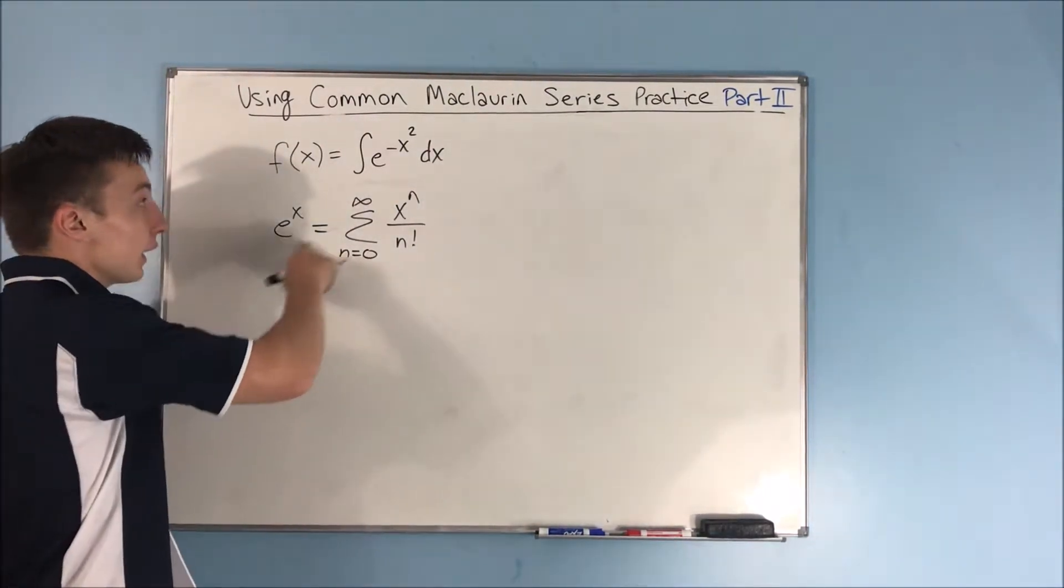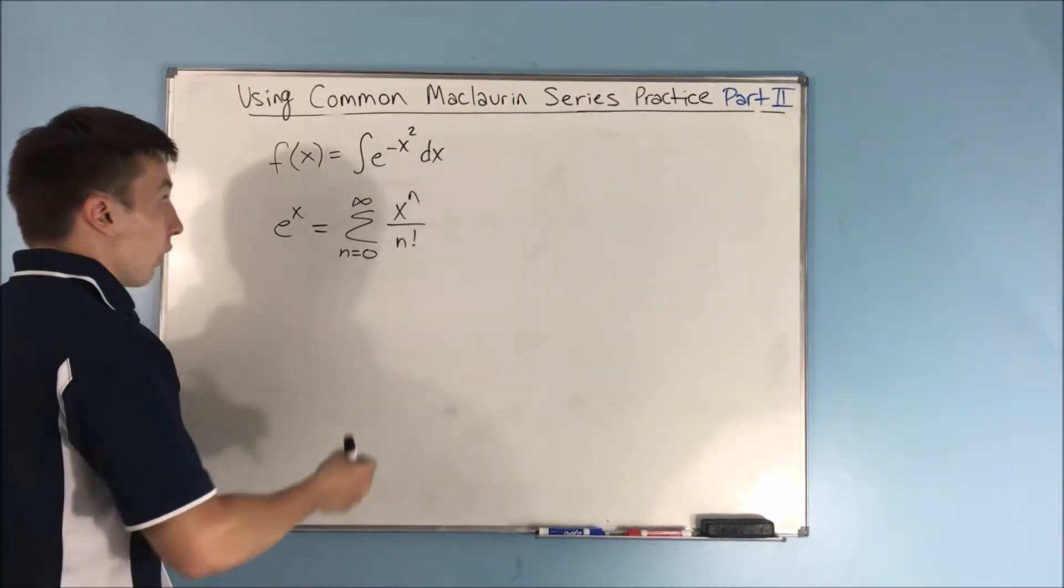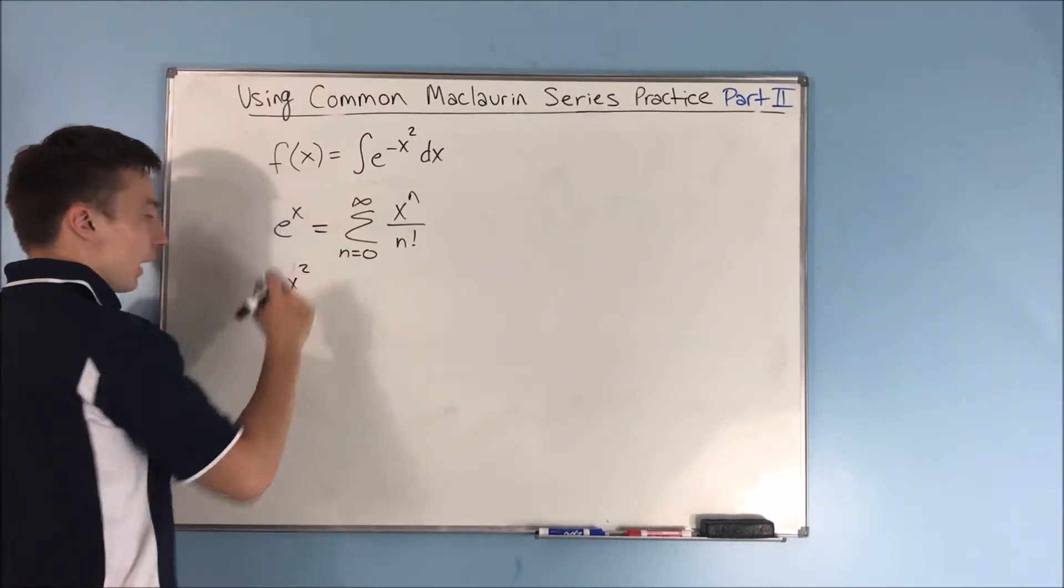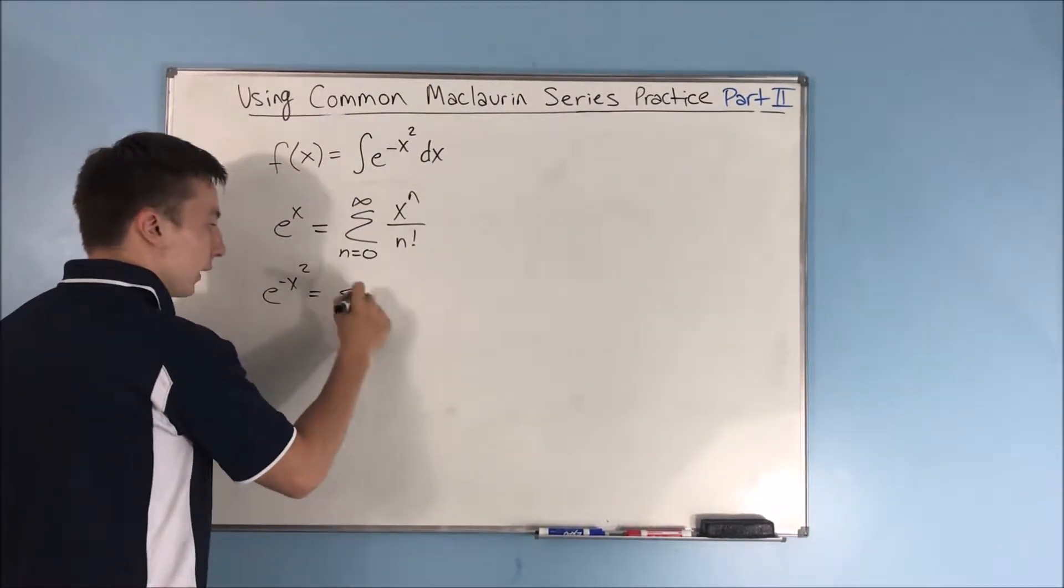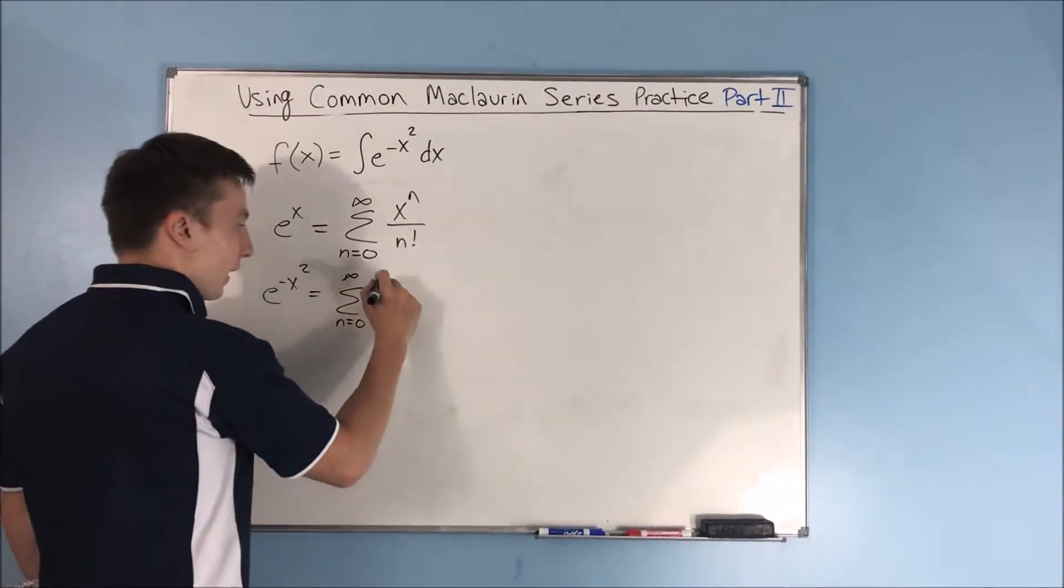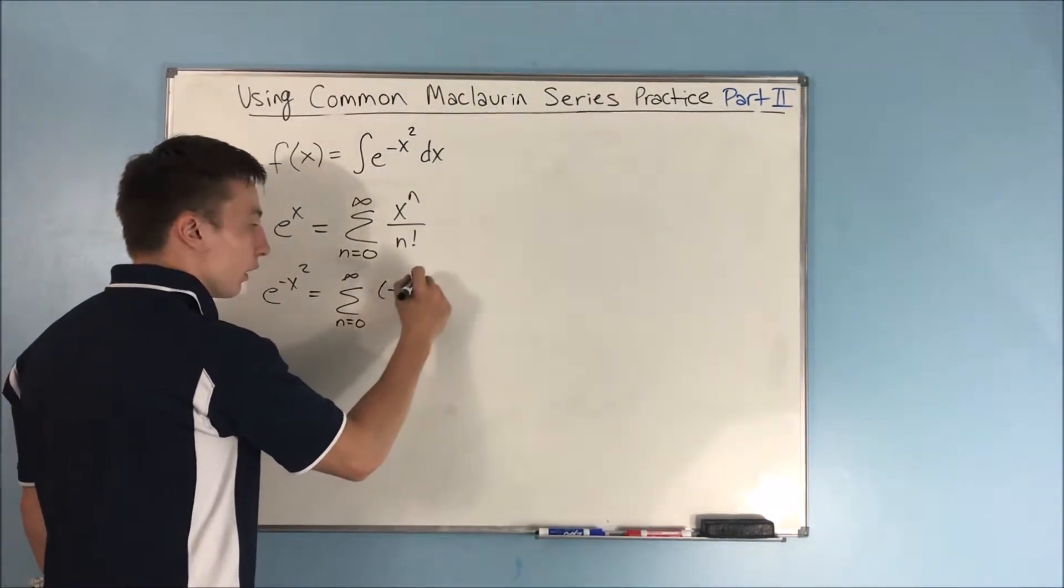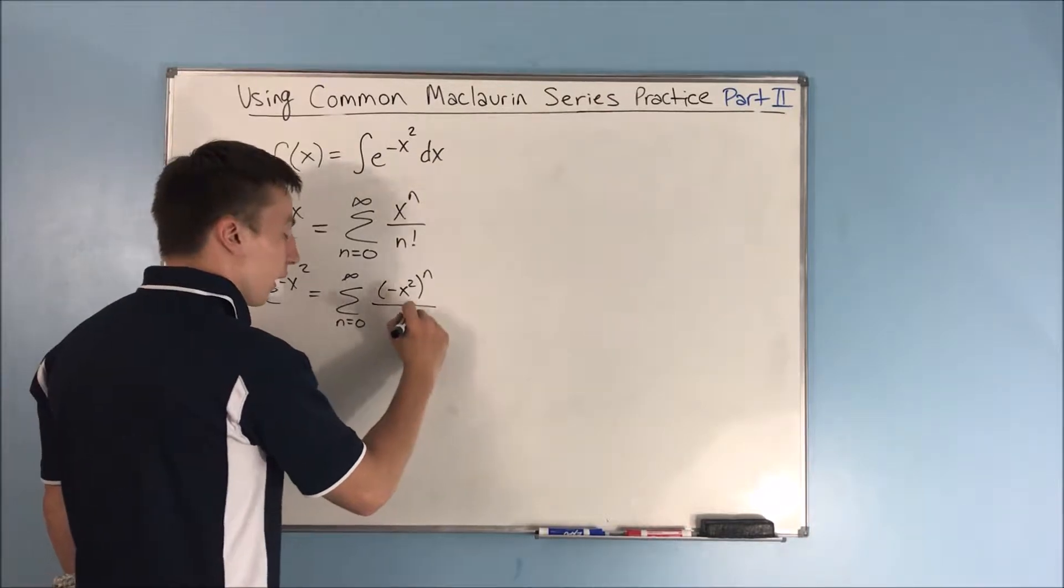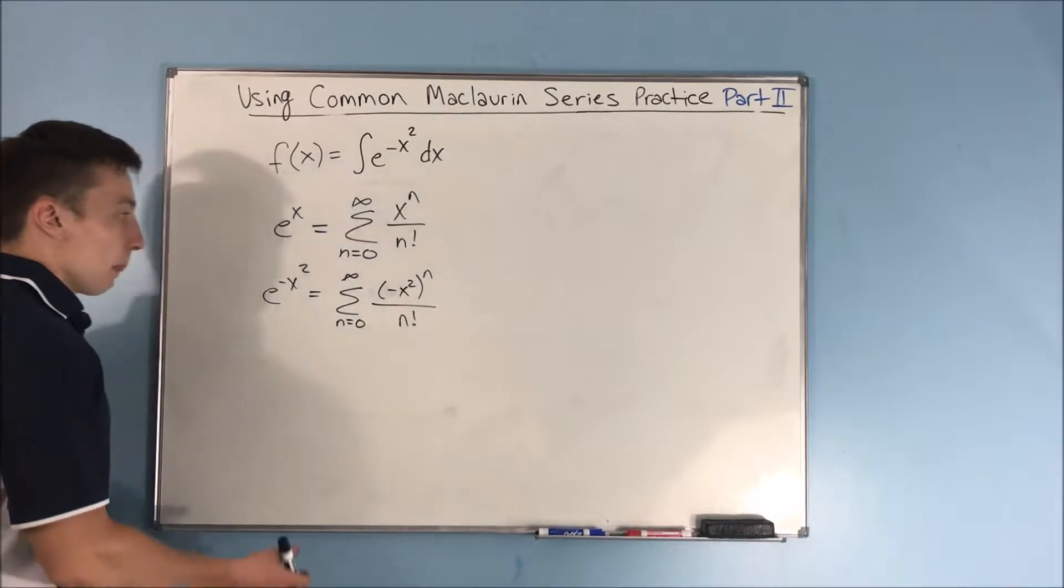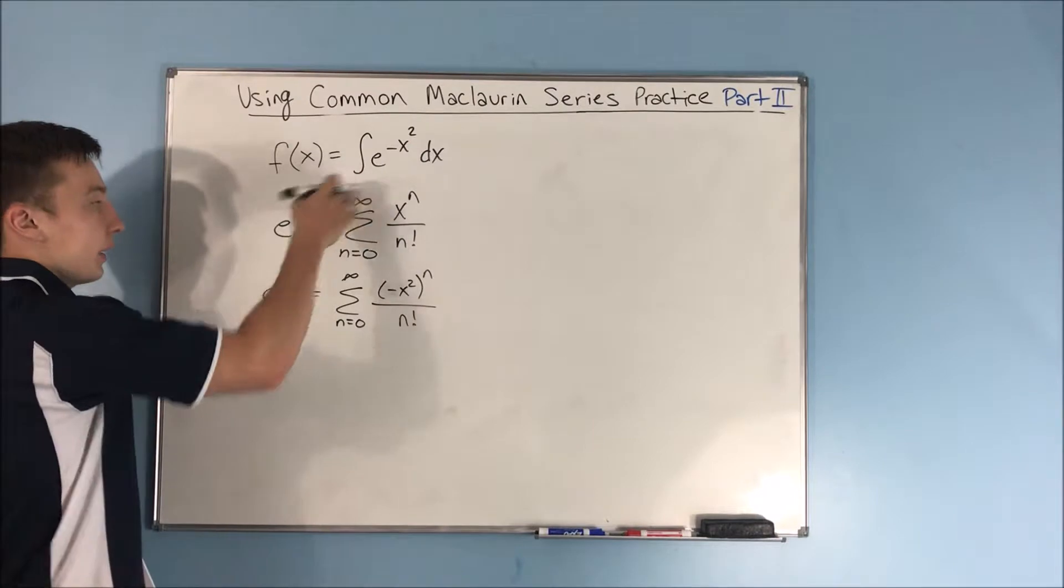So now we need to get this e to the x to look like this integral of e to the negative x squared dx. Let's start off by putting in a negative x squared for x. When we do that, we get the sum from n equals 0 to infinity of negative x squared raised to the n power over n factorial. Now we're starting to look more and more like this integral.